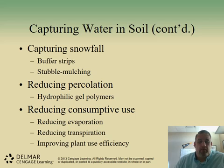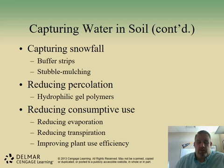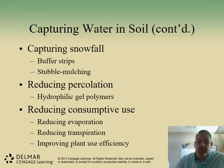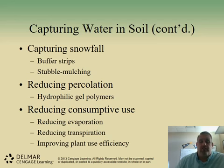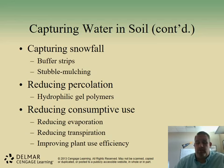Reducing consumptive use goes back to irrigation water efficiency. By reducing evaporation and transpiration — using just the right amount of water and replacing only what is lost to the plant — we consumptively use water more efficiently and avoid applying water we don't need to apply.